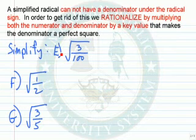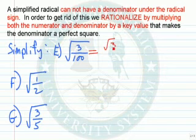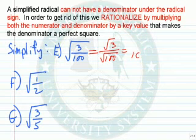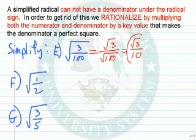Let's begin with example E. The square root of 3 over 100. We write the square root of 3 in the numerator over the square root of 100. Now 100 is a perfect square, so the square root of 100 is 10. So our final answer is the square root of 3 over 10.